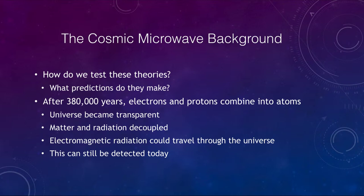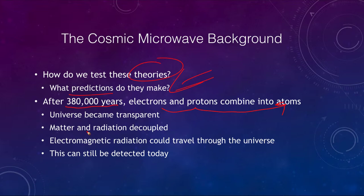What is the evidence for the Big Bang? Any good theory has to make predictions. One prediction the Big Bang makes is that at about 400,000 years, electrons and protons would combine into atoms, and at that point the universe became transparent. Before this time, no radiation could travel through the universe — it was constantly being absorbed and re-emitted, just as we cannot see into the center of the Sun. At this point, matter and radiation decoupled, and electromagnetic radiation like light could travel freely through the universe.